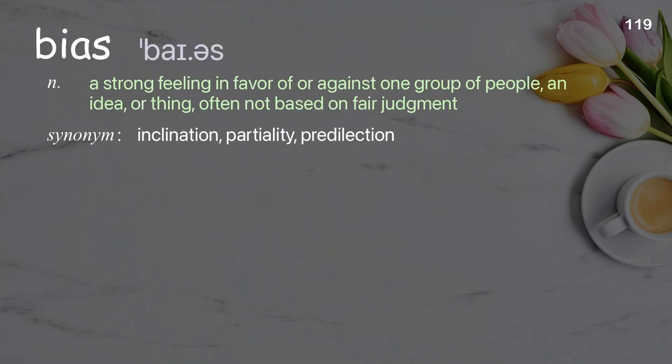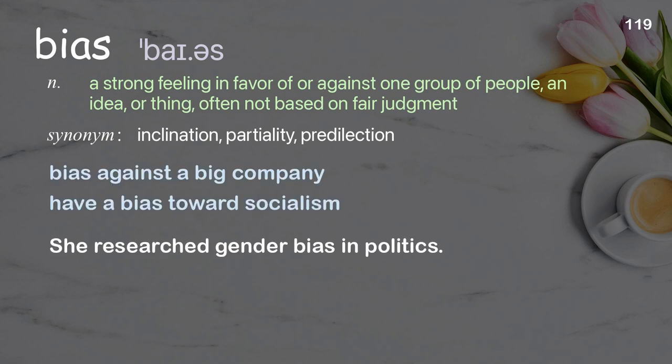Bias: A strong feeling in favor of or against one group of people, an idea, or thing, often not based on fair judgment. Examples: Bias against a big company. Have a bias towards socialism. She researched gender bias in politics.